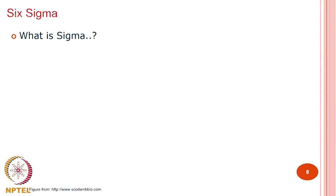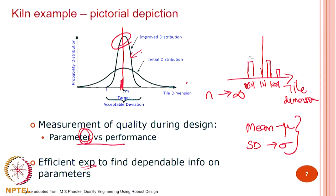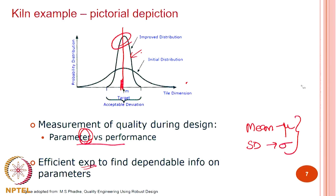Now, as I pointed out, sigma is the standard deviation. Does anyone know what Six Sigma stands for? There is a small digression here — what do you think is the use of these kinds of plots? What do you think is the use of a probability density function? What can you find from this?